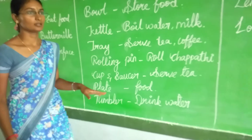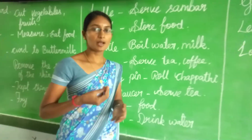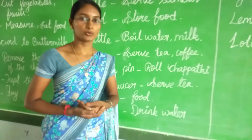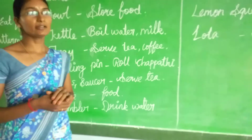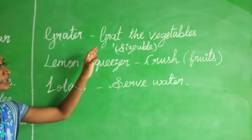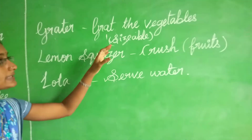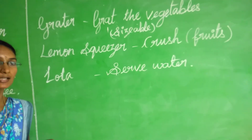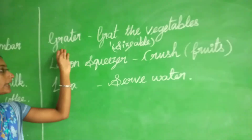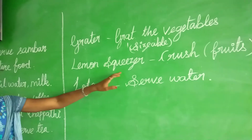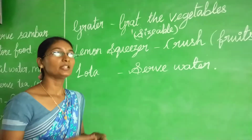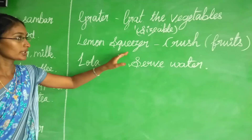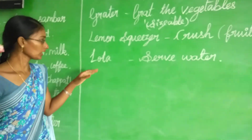Next, plate. Plate is used to drink water, juice, and liquid items. Next, plate. Plate is used to place vegetables and foods in the same size portions. Next, lemon squeezer.